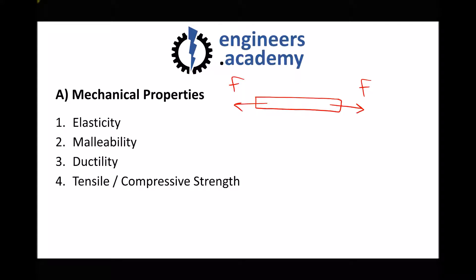Strength is all about the amount of force required to make the piece of material fail — a material with low strength would only require a relatively small force before it ruptured. Compressive strength is very similar, except we're referring to a force in the compressive direction, such as a pillar supporting the weight of a ceiling needing high compressive strength.